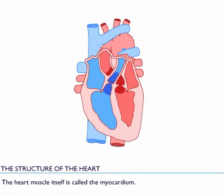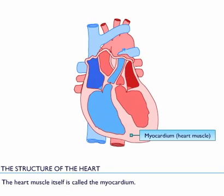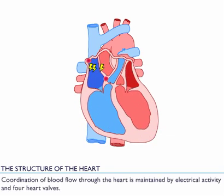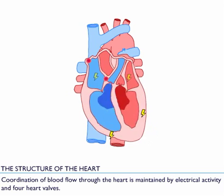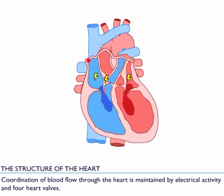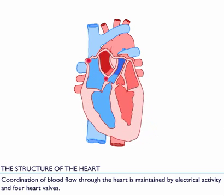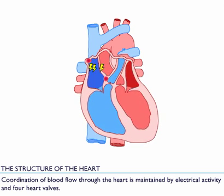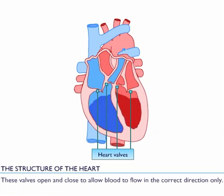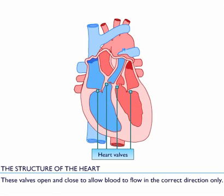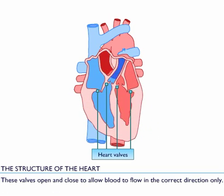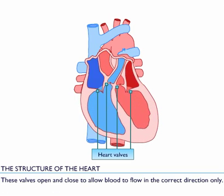The heart muscle itself is called the myocardium. Coordination of blood flow through the heart is maintained by electrical activity and four heart valves. These valves open and close to allow blood to flow in the correct direction only.